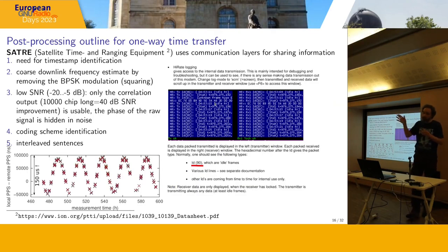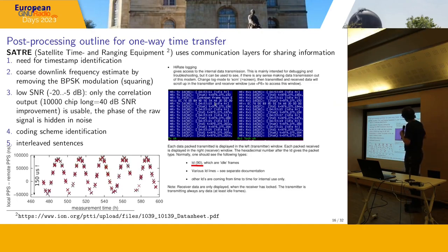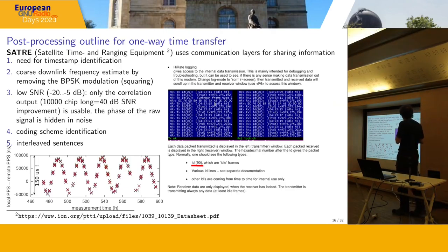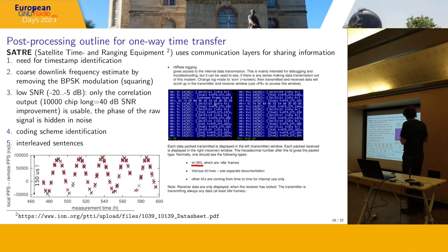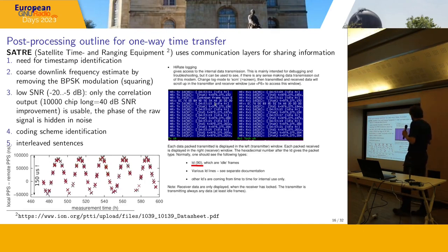At GRCON I covered how to receive and correlate a signal to get time of flight. What's new here: the SATR modem documentation mentions a high-rate output intended for debugging and troubleshooting, which provides access to internal data transmission. My understanding is that SATR beams all information needed for one-way time transfer inside its digital sentences. The challenge is recovering this information without being informed of the encoding scheme or data structure.